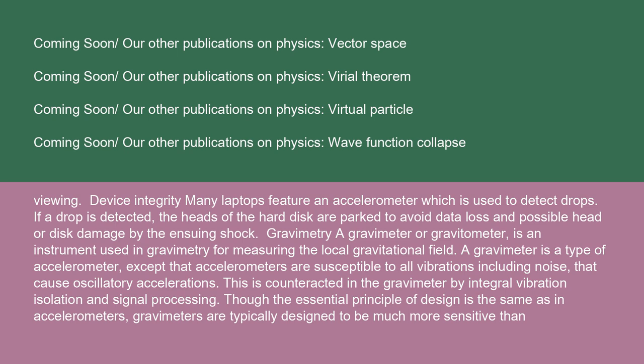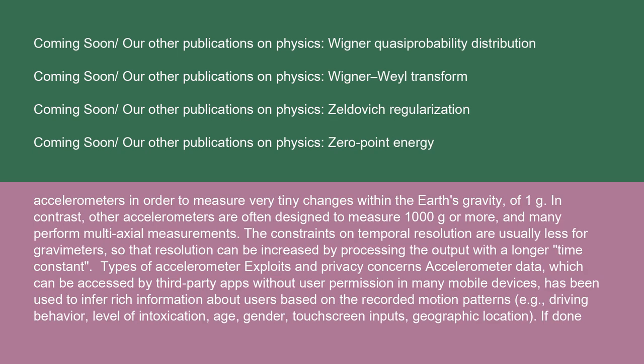A gravimeter or gravitometer is an instrument used in gravimetry for measuring the local gravitational field. A gravimeter is a type of accelerometer, except that accelerometers are susceptible to all vibrations including noise that cause oscillatory accelerations; this is counteracted in the gravimeter by integral vibration isolation and signal processing. Gravimeters are typically designed to be much more sensitive than accelerometers in order to measure very tiny changes within the Earth's gravity of 1 g, whereas other accelerometers are often designed to measure 1000 g or more. The constraints on temporal resolution are usually less for gravimeters, so that resolution can be increased by processing the output with a longer time constant.